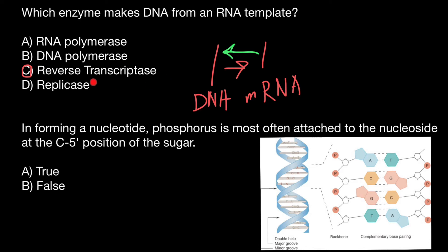And we can find such enzymes only in certain viruses, which we call retroviruses. Next question. In forming a nucleotide, phosphorus is most often attached to the nucleotide at the carbon-5 position of the sugar. Is it true or false?